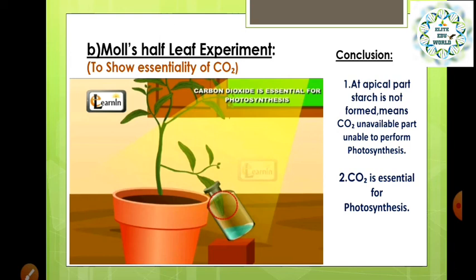To test starch, the leaf is dipped into iodine. When the leaf is dipped into iodine, at the basal part of the leaf, blue colour appears — meaning starch formation has occurred — meaning carbon dioxide is also essential for photosynthesis. At the apical part, starch is not formed, meaning carbon dioxide is unavailable there, so it is unable to perform photosynthesis. We have concluded from this experiment that carbon dioxide is also essential for photosynthesis.